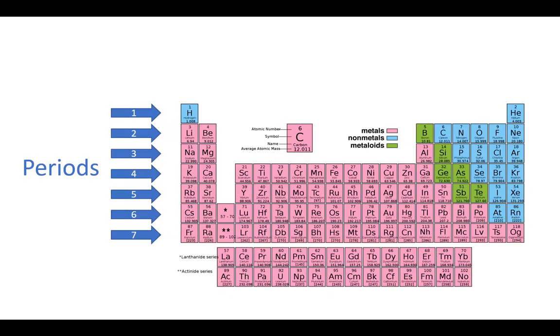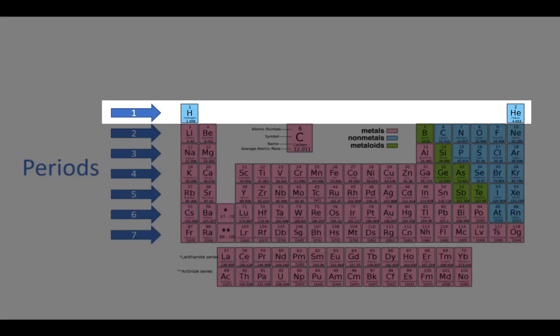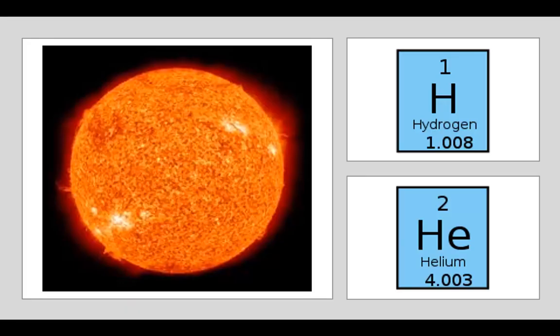We call rows periods. Period 1 only has two elements in it: hydrogen and helium. Hydrogen and helium are found in the sun, and they are the least dense elements in the universe.